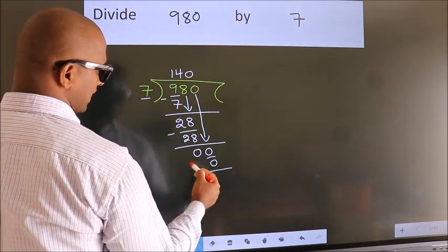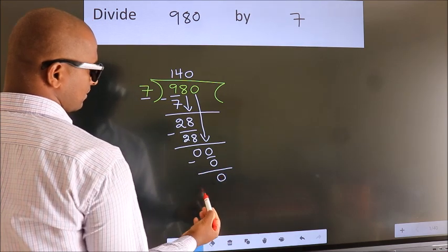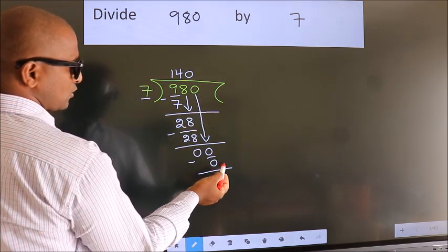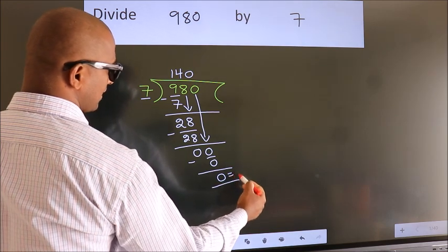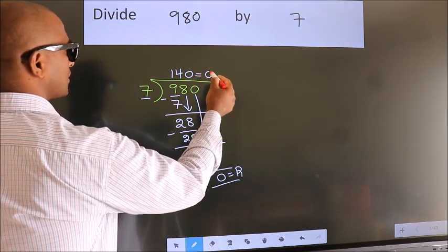Now we subtract. We get 0. No more numbers to bring down. So we stop here. This is our remainder. This is our quotient.